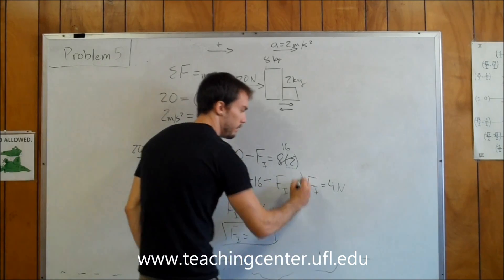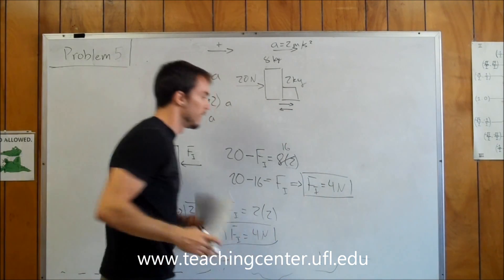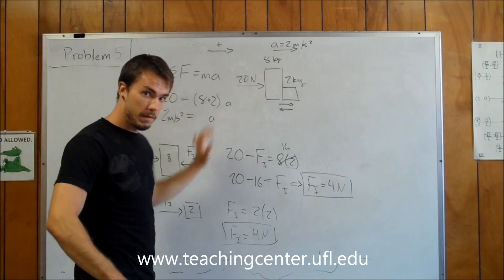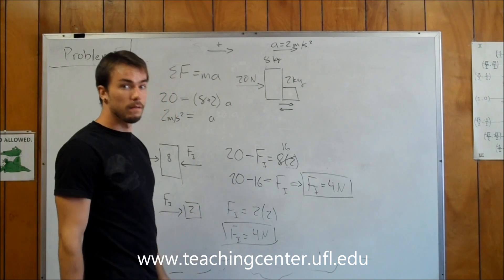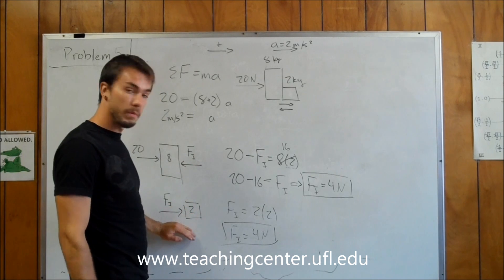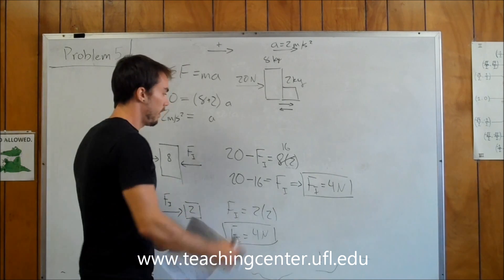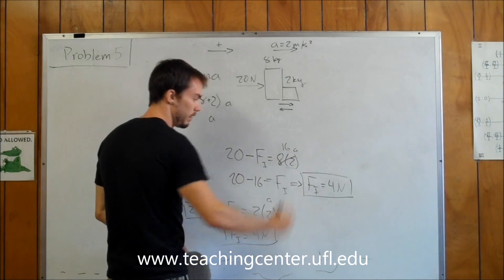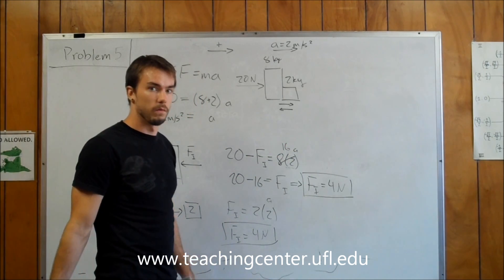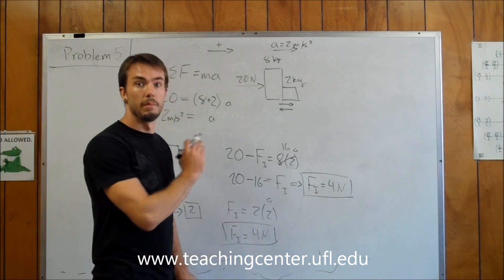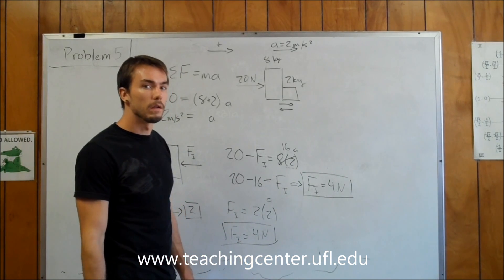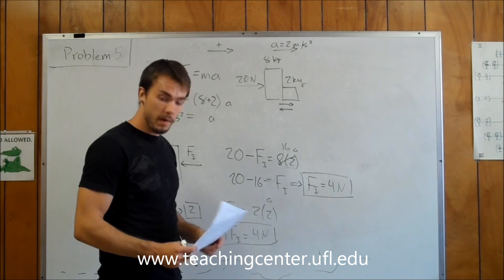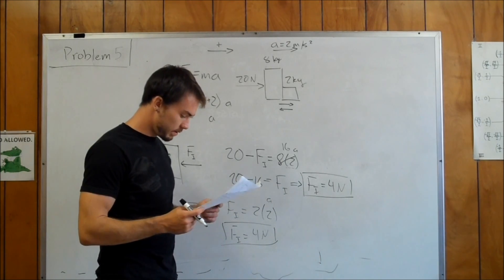So either way you look at it is perfectly fine. If you don't like this way I'm doing it, where you're looking at the entire system and then isolating, you can look at each of the blocks and draw your two separate free-body diagrams from the start, and use this equation and this equation with an unknown acceleration, and you can still solve for the internal force. Either way works fine. I personally think this way is a little quicker and a little easier once you get used to it. And that's how you solve the problem. 4 newtons is your answer, which is going to be our first choice.